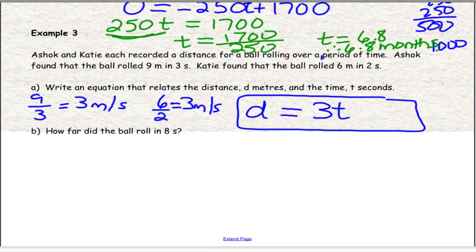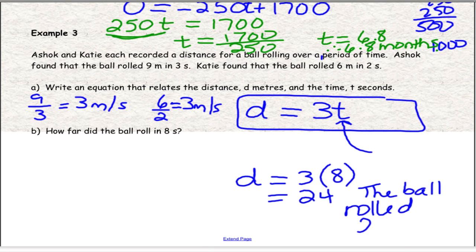Then it says, how far did the ball roll in 8 seconds? Well, 8 seconds, t is time. So what we would need to do is just sub in 8 for t. So we get 24. And what that means, we just found a distance. How far did the ball roll? In 8 seconds, the ball rolled 24. And if you're wondering about what kind of units this would be in, it tells you in the question. It'll always say, are we talking about meters or kilometers? This is meters. So the ball rolled 24 meters.